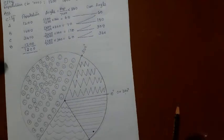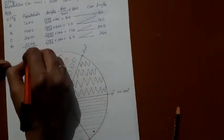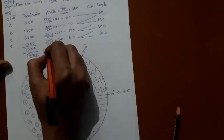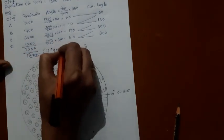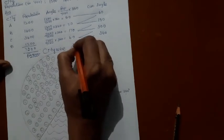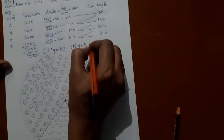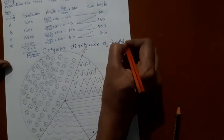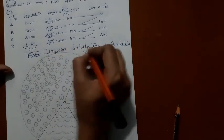Now let us give a title for this. It is citywise distribution of population in an angular diagram, or pie diagram.